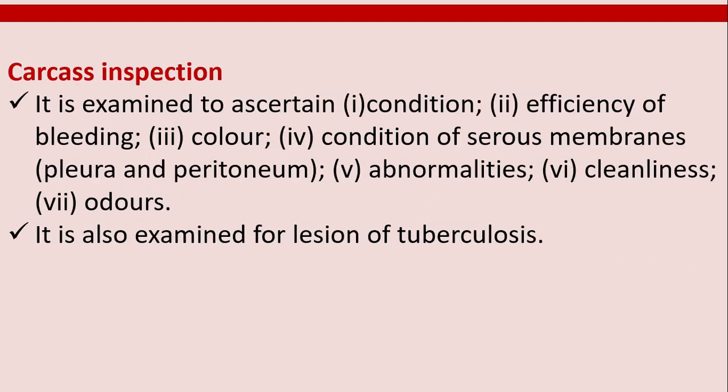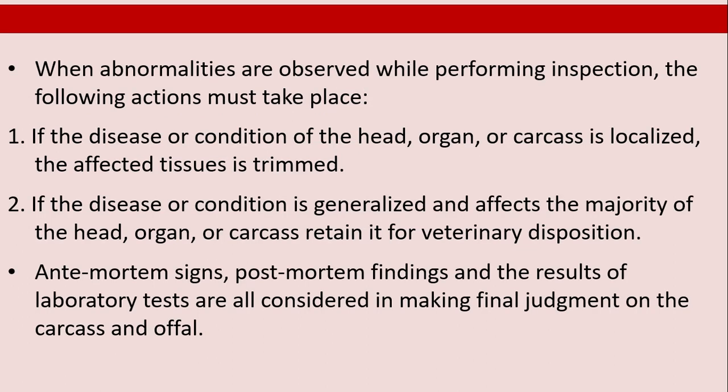Carcass inspection ascertains condition, efficiency of bleeding, color, condition of serous membranes (pleura and peritoneum), abnormalities, cleanliness, and odors. It is also examined for lesions of tuberculosis. When abnormalities are observed, the following actions apply: if the disease is localized, the affected tissue is trimmed; if the disease is generalized and affects the majority of the carcass, retain it for veterinary disposition. Ante-mortem signs, post-mortem findings, and laboratory test results are all considered in making the final judgment on the carcass.